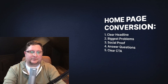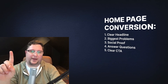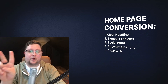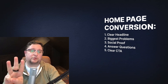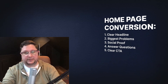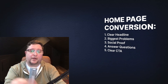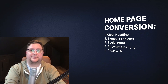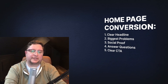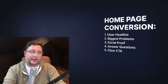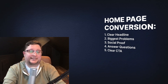As a quick recap of how to make your homepage convert better: number one, clear headline — say what you want to say and answer 'what do we do' right away. Number two, acknowledge their biggest problems so they know you understand them. Number three, build social proof by showing what other people like them have experienced working with you. Number four, answer their most critical questions that are holding them back from taking the next step. Number five, be very clear about the CTA you want them to take. When you put all these steps in place, you're making your homepage a very high converting page — and it is probably the highest visited page on your website.